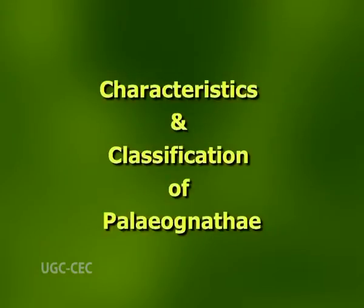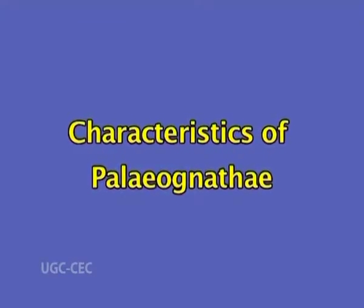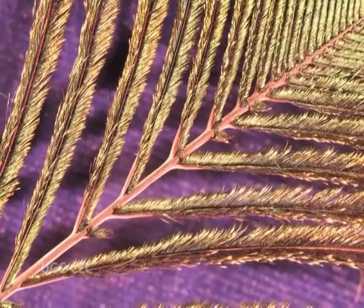Moving ahead, we shall now discuss characteristics and classification of Paleognathae. They are modern, big-sized birds, mostly flightless walking or running birds. Wings are reduced, vestigial or absent, and feathers are devoid of interlocking mechanism. Rectrices are absent or irregularly arranged. Tertiaries are irregular. Oil glands are absent except in rheas and kiwi. Skull is typically paleognathous — the vomer is large and broad, interpolated between palatines. Skull sutures remain distinct for a long time.